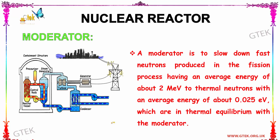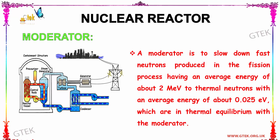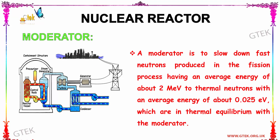Now let us see about the moderator. A moderator is used to slow down fast neutrons produced in the fission process, which have an average energy of about 2 MeV, to thermal neutrons with an average energy of about 0.025 eV, which are in thermal equilibrium with the moderator.